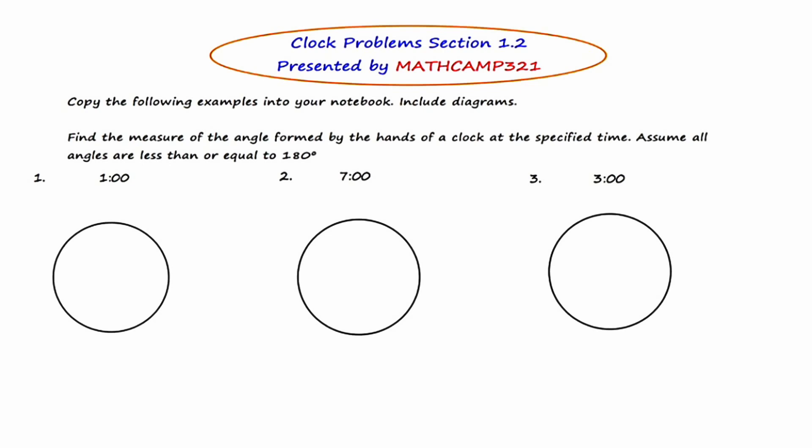The first fact is that a circle has 360 degrees. The second fact is that a clock is divided into 12 equal sections. The third fact is that because of facts 1 and 2, if you take the 360 degrees in a circle and you divide it by 12, each section of the clock is 30 degrees. And that's very important to know.